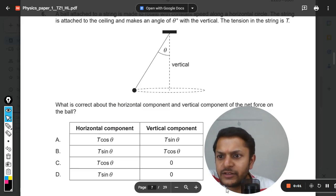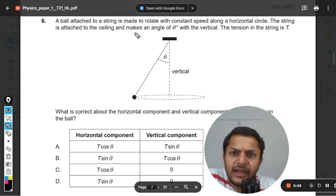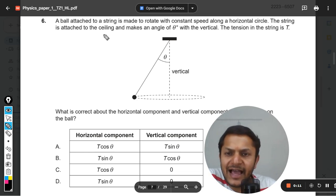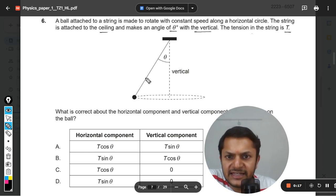Okay, let us see what is there in this question. A ball attached to a string is made to rotate with constant speed along a horizontal circle. The string is attached to the ceiling and makes an angle theta degrees with the vertical. The tension in the string is given as T.